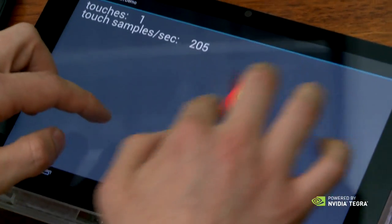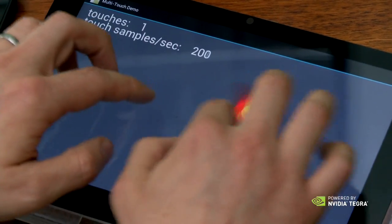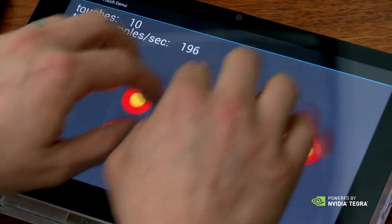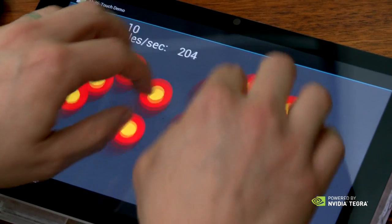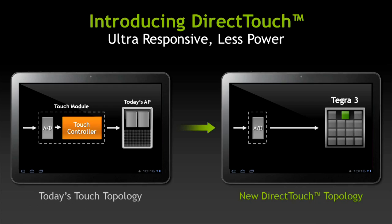We're offloading a lot of this performance and processing onto Tegra, and we're removing some of the components and some of the power that's being sucked up in a standard device. So that's DirectTouch. We improve the overall touch performance as well as reduce power for an overall better user experience.